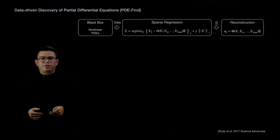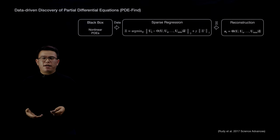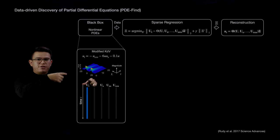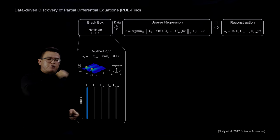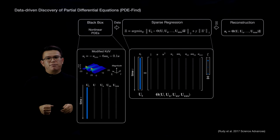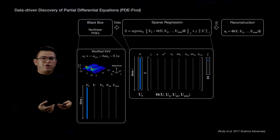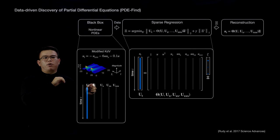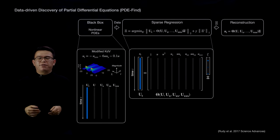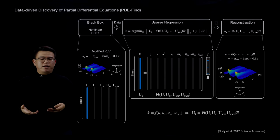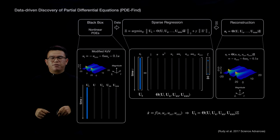With some modification to the CINDY framework, Rudy et al. made it possible to identify PDE equations as well, calling it PDE-FIND. For example, given a nonlinear PDE, we can measure it spatially and gather measurement data, then build a library with many candidate terms and solve a sparse-promoting regression problem. This generates a sparse vector C that selects a few terms from the library to best represent the partial derivative u_t, and we can reconstruct the symbolic form of the PDE equations.